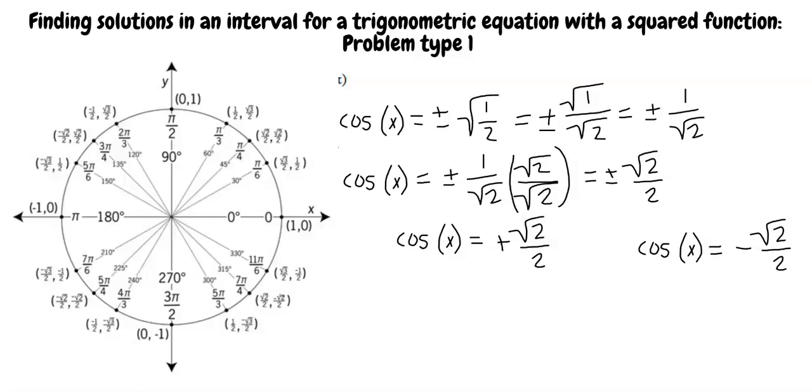Now, what are the answers for x when cosine x equals square root of 2 over 2? It looks like the cosine of x equals positive square root 2 over 2 at π over 4 and 7π over 4. Correct.